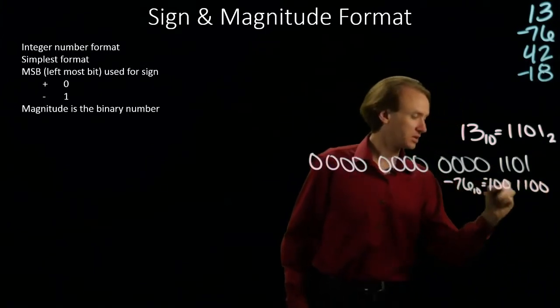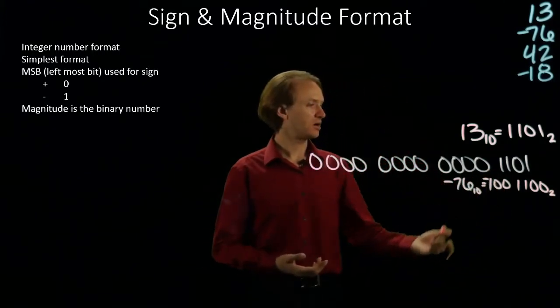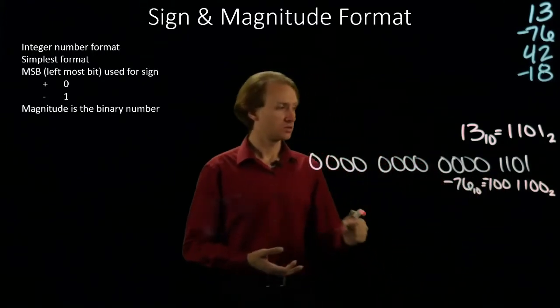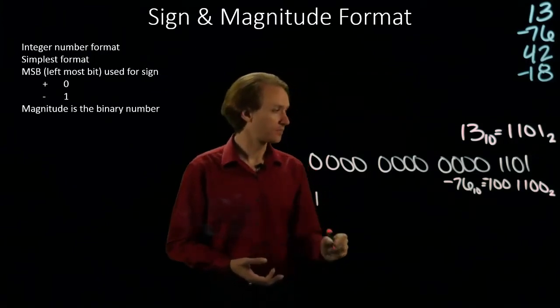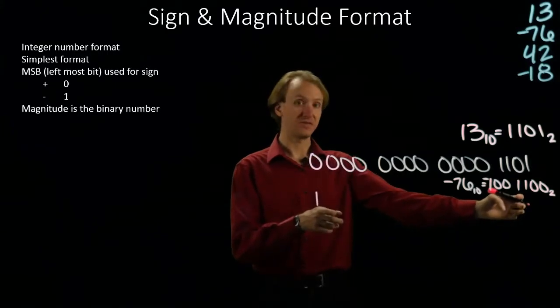And this is a negative number in binary. So this time my number is negative, so my sign bit will be a 1. And then I just need to encode this binary number in the remaining 15 bits.